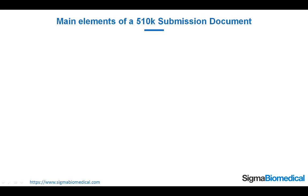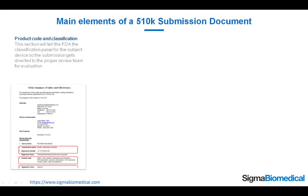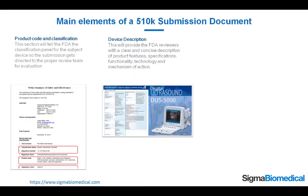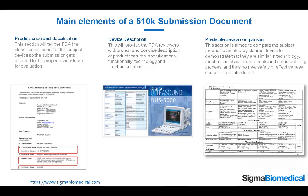Main elements of a 510k submission document. Product Code and Classification: this section will tell the FDA the classification panel for the subject device so the submission gets directed to the proper review team for evaluation. Device Description: this will provide the FDA reviewers with a clear and concise description of product features, specifications, functionality, technology, and mechanism of action. Predicate Device Comparison: this section is aimed to compare the subject product to an already cleared device to demonstrate that they are similar in technology, mechanism of action, materials, and manufacturing process, and thus no new safety or effectiveness concerns are introduced.